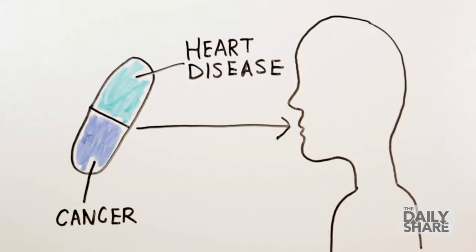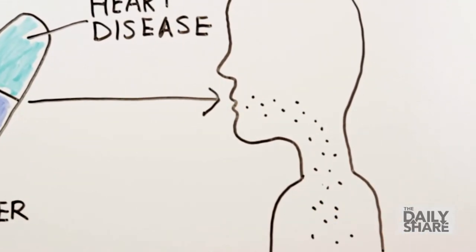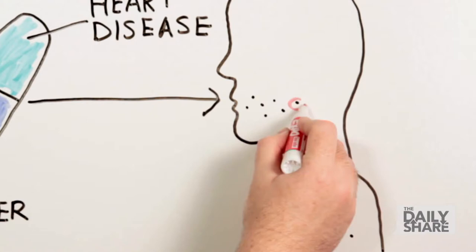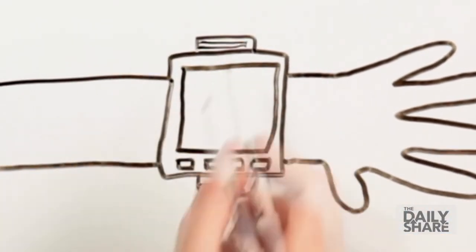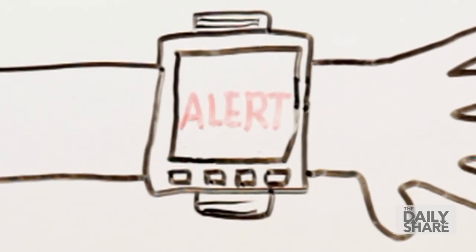Here's how it would work. Tiny particles from the pill are programmed to spread throughout the body and latch on to abnormal cells. A wearable device tracks the particles, in theory, to find out if cancer or other diseases are present.